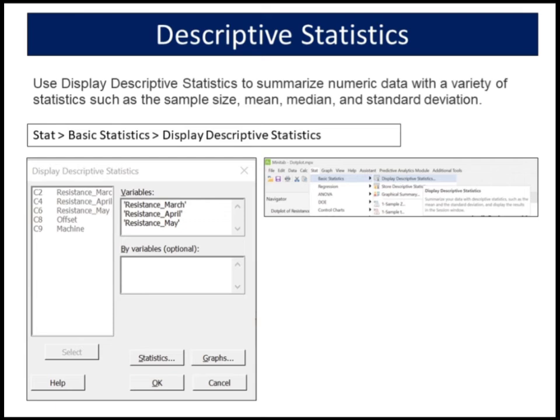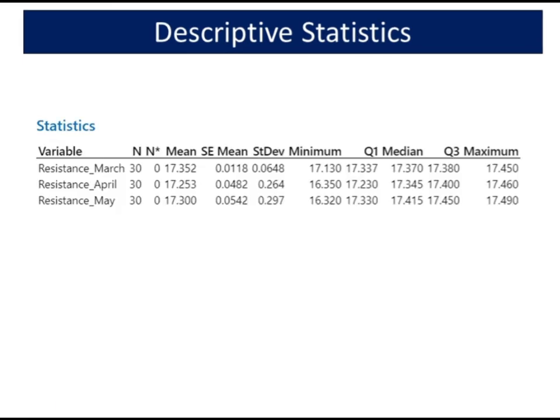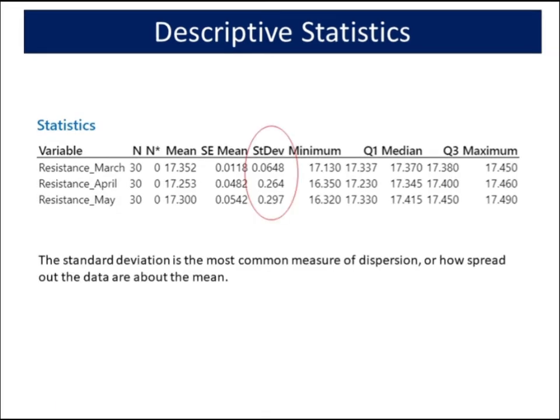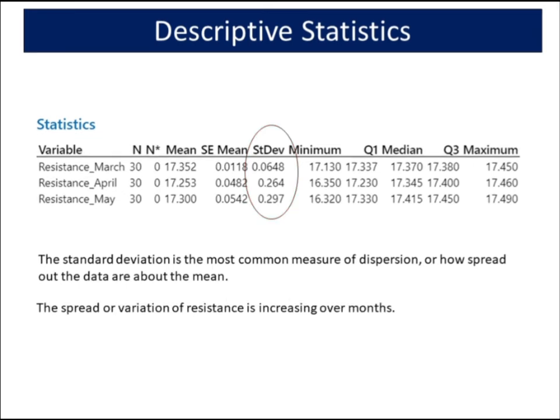The standard deviation is the most common measure of dispersion, or how spread out the data are about the mean. From the analysis, the spread or variation of resistance is increasing over months.